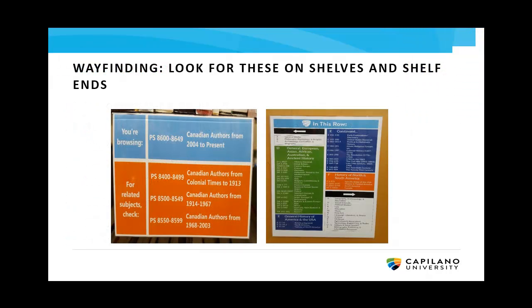When you head upstairs, look out for these handy signs that can really help point you in the right direction. We have signs in the middle of shelves that tell you what subject area you're currently browsing, and signs on the end of the racks telling you which direction to go for which letter ranges.